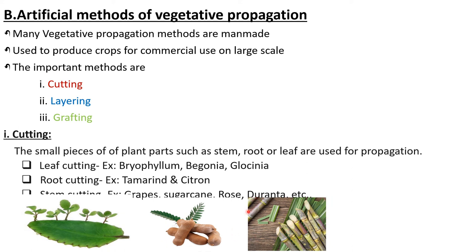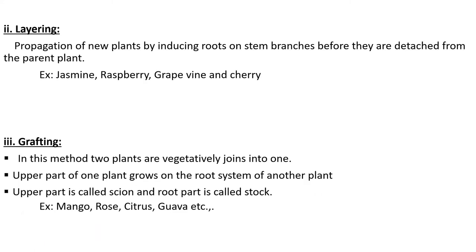This picture depicts the stem pieces of sugarcane. Take one piece of sugarcane, plant it in the soil, and you can observe the formation of adventitious roots from the nodes, which ultimately grow into the complete sugarcane plant.